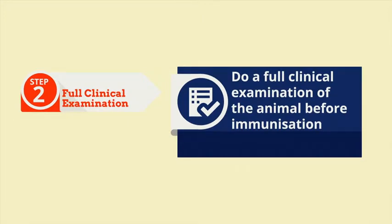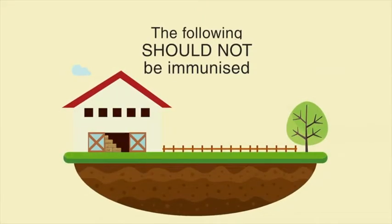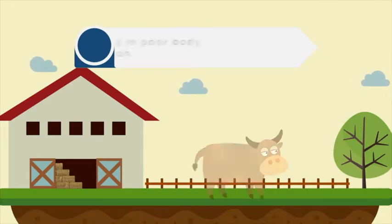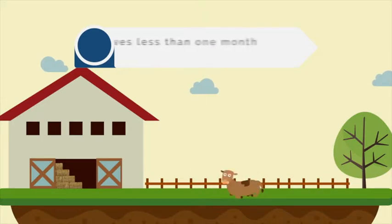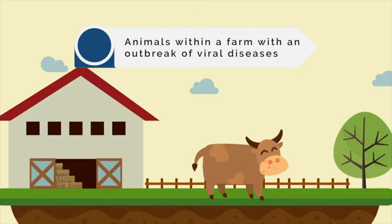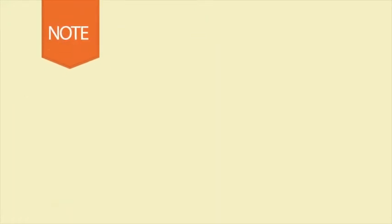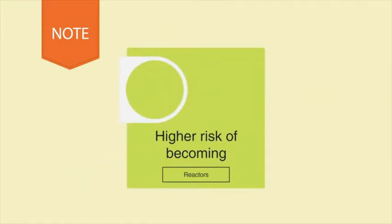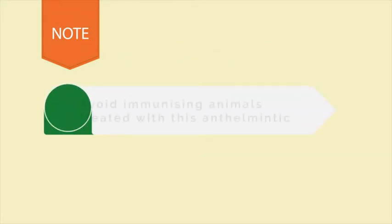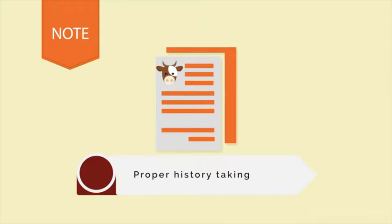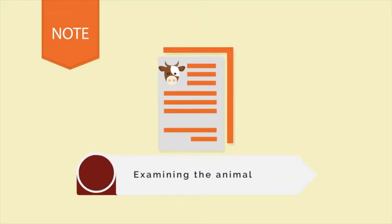Step 2: Full clinical examination of the animal to be immunized. The following animals should not be immunized: animals showing symptoms of ECF, animals with a fever, animals in poor body condition, calves less than one month old, animals in the last month of pregnancy, and animals within a farm with an outbreak of viral diseases such as foot-and-mouth disease and lumpy skin disease. Note: animals that have been treated with the anthelmintic levamisole have a higher risk of becoming reactors following immunization. Avoid immunizing animals treated with this anthelmintic in the last one month, if you are able to establish this through proper history taking prior to examining the animal.